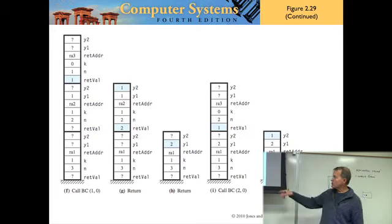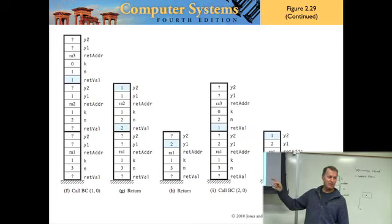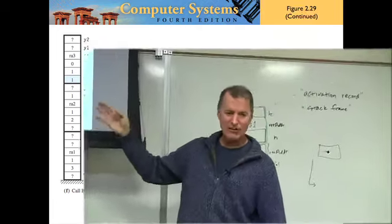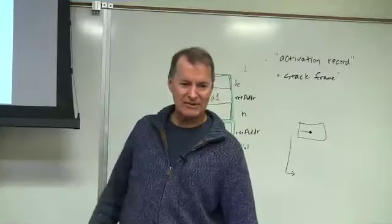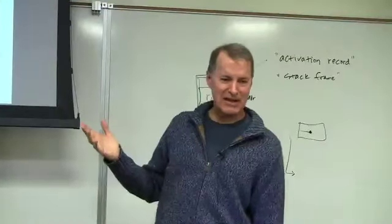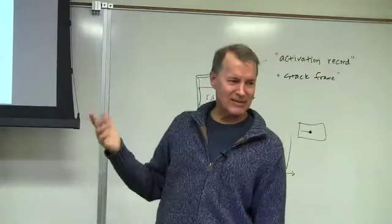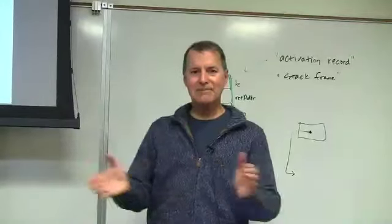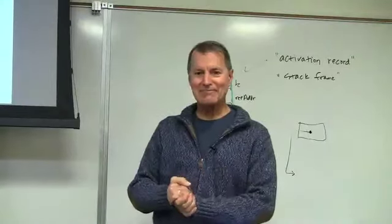Your exercise for Thursday is to draw a snapshot of the runtime stack at a certain call at a certain time using the C++ memory model rules. It will be for the binomial coefficient but with different values. Blanks in the cells mean the value hasn't been assigned yet. See you next time.